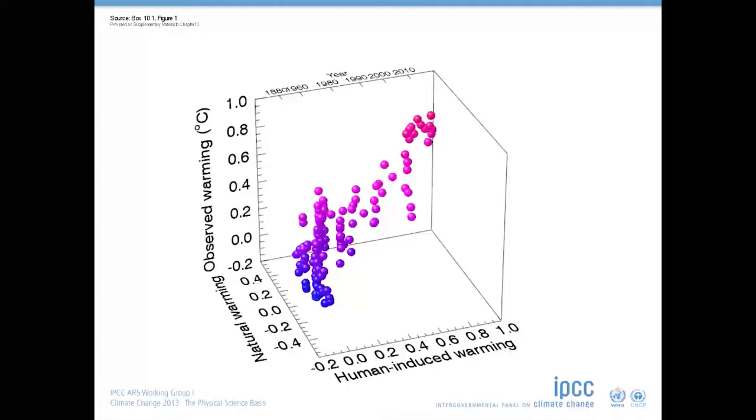If we rotate this plot around, you can see how the warmest observed temperatures occur at the back right corner, indicating both human and natural factors are playing a role in these observed temperature changes.